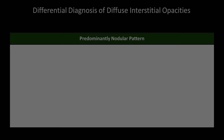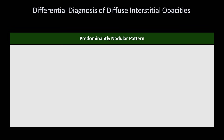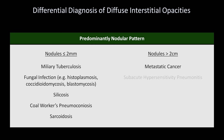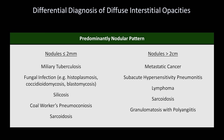When it comes to causes of diffuse interstitial opacities with a predominantly nodular pattern, these can be broken down into those with nodules under 2 mm and those with larger nodules. Diseases causing small nodules include miliary tuberculosis, fungal infections, silicosis, coal workers' pneumoconiosis, and sarcoidosis. Those which cause medium and large nodules include metastatic cancer, subacute hypersensitivity pneumonitis, lymphoma, sarcoidosis, granulomatosis with polyangiitis, and rheumatoid nodules.